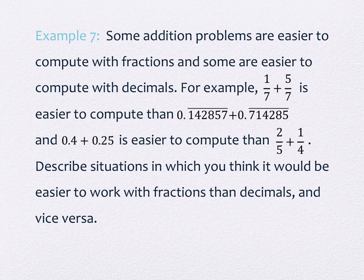We have one more example about the number 1 7th, division by 7. Some addition problems are easier to compute with fractions, and some are easier to compute with decimals. It is a true fact whether you like decimals or whether you like fractions or not. Some work better in one than they do in the other. For example, 1 7th plus 5 7ths is easier to compute than its decimal form. The decimal form for 1 7th is 0.142857 repeating, and for 5 7ths it's 0.714285 repeating. Would you agree that it's easier to add the fractions there than the decimals? A lot easier.